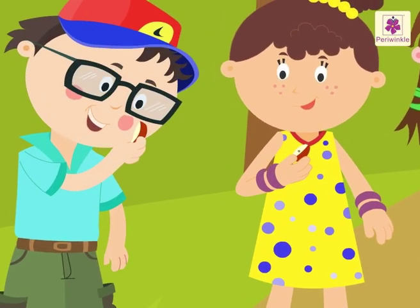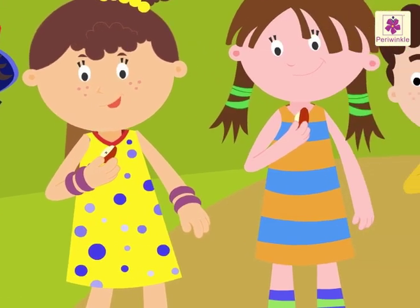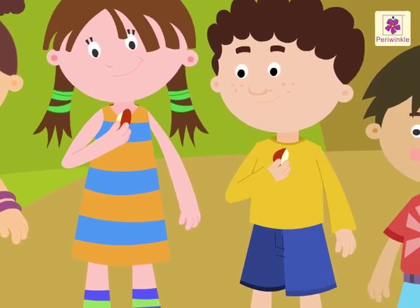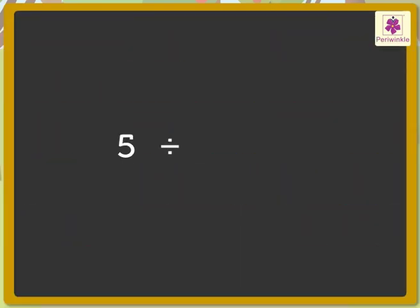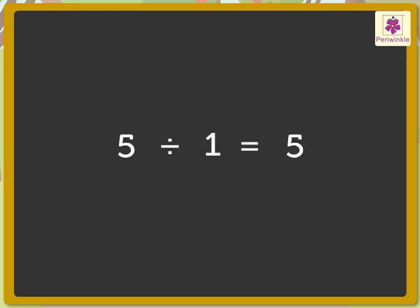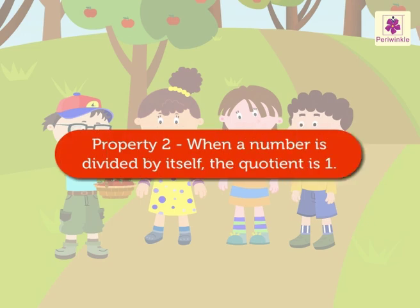We distribute the apple equally among the five kids. Therefore, five divided by one is equal to five. This concludes that when a number is divided by one, the quotient is the number itself.